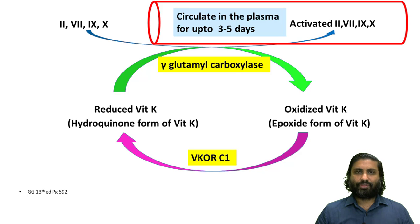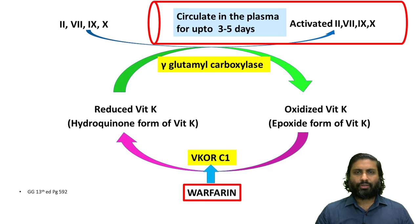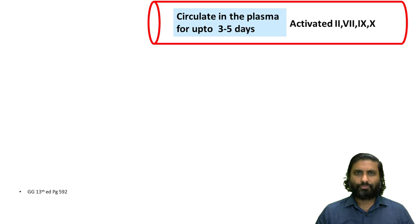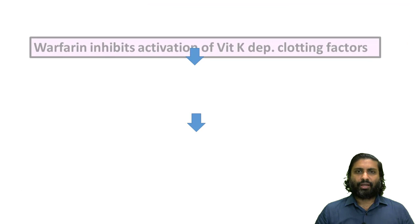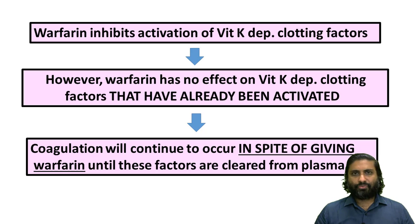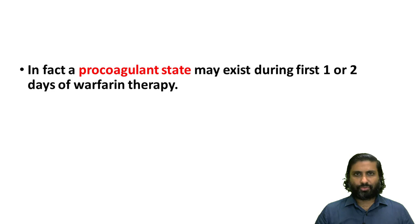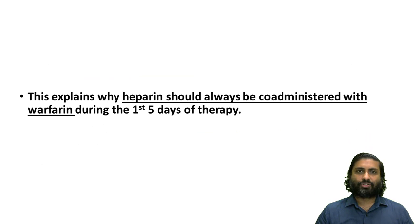When factors 2, 7, 9, and 10 get activated, these activated factors tend to persist in the plasma for 3 to 5 days. When warfarin is administered, it inhibits vitamin K epoxide reductase, inhibits regeneration of the hydroquinone form of vitamin K, inhibits gamma-glutamyl carboxylase functioning, and inhibits the activation of factors 2, 7, 9, and 10. However, factors that have already been activated continue to act, so coagulation continues until they are cleared from the plasma. In fact, a pro-coagulant state could occur during the first one or two days of warfarin therapy, and this forms the basis of the delayed onset of action of warfarin.